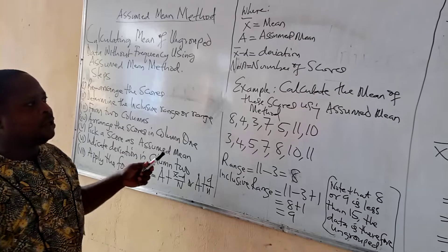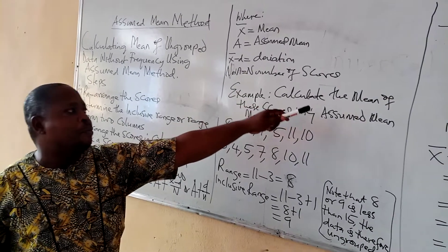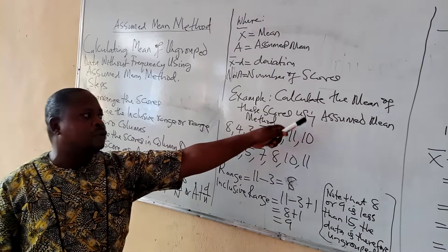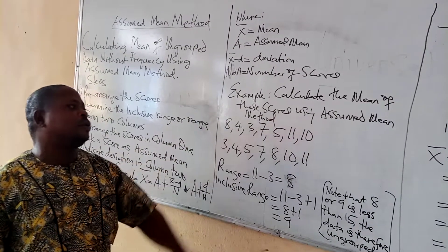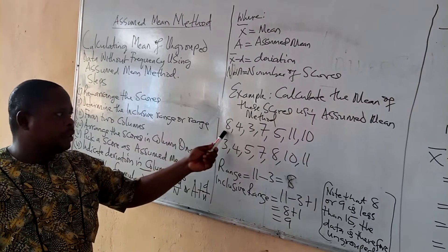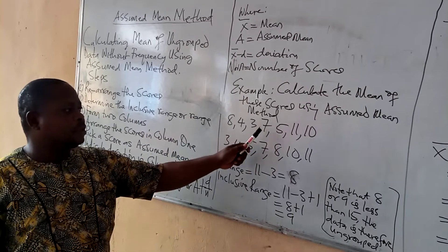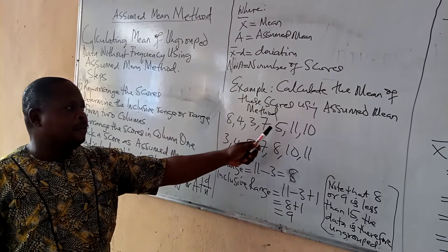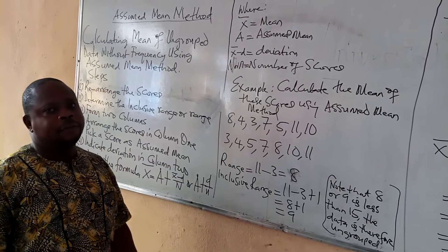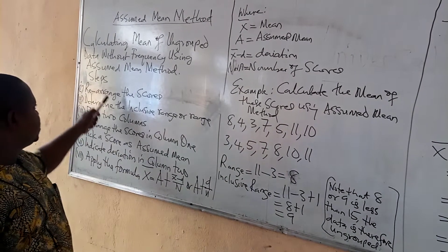Now let's give an example and see how we can follow these steps. Calculate the mean of these scores using the assumed mean method. The scores are: eight, four, three, seven, five, eleven, and ten.